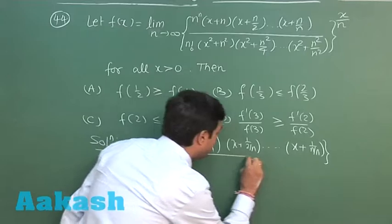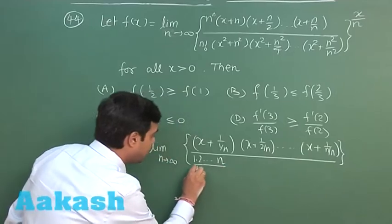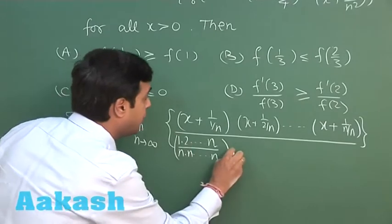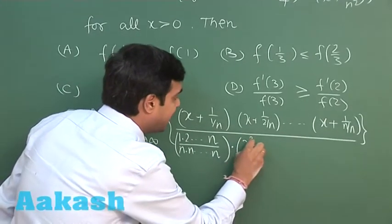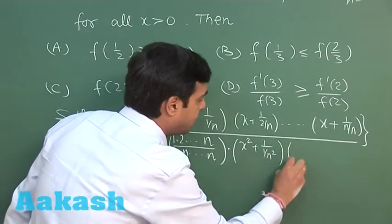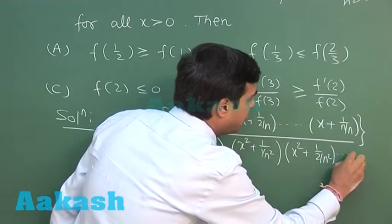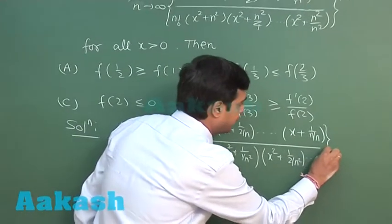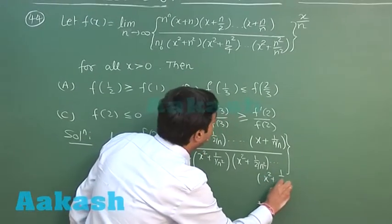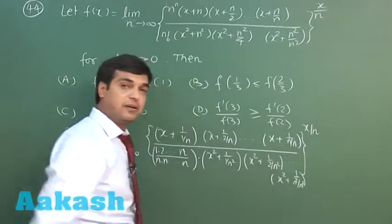Dividing by 1·2·3·...·n and then n·n·n·...·n (n times), we get terms of the form (x² + (r/n)²) for r from 1 to n, raised to the power x/n.